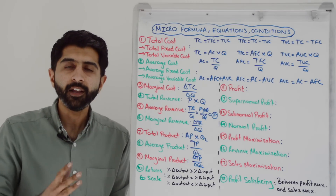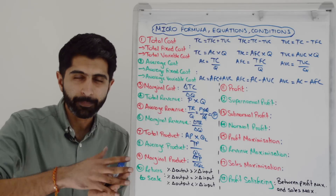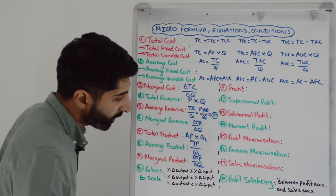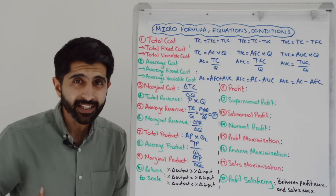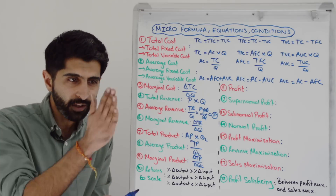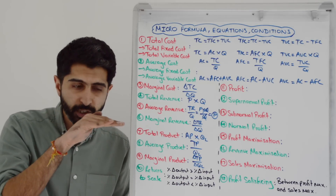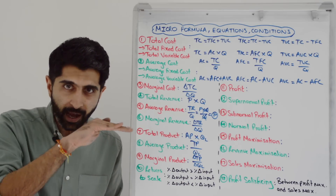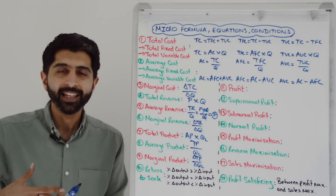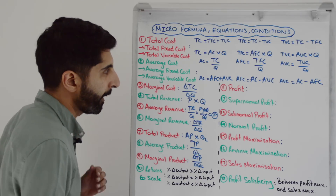Returns to scale: to derive the shape of the long run average cost curve, we are comparing the percentage change of output to the percentage change of input. If the percentage change of output is greater than the percentage change of input, you get increasing returns to scale — the LRAC curve will slope downwards. When the two are equal, constant returns to scale — the curve will be flat. If the percentage change of output is less than the percentage change in input, that is decreasing returns to scale.